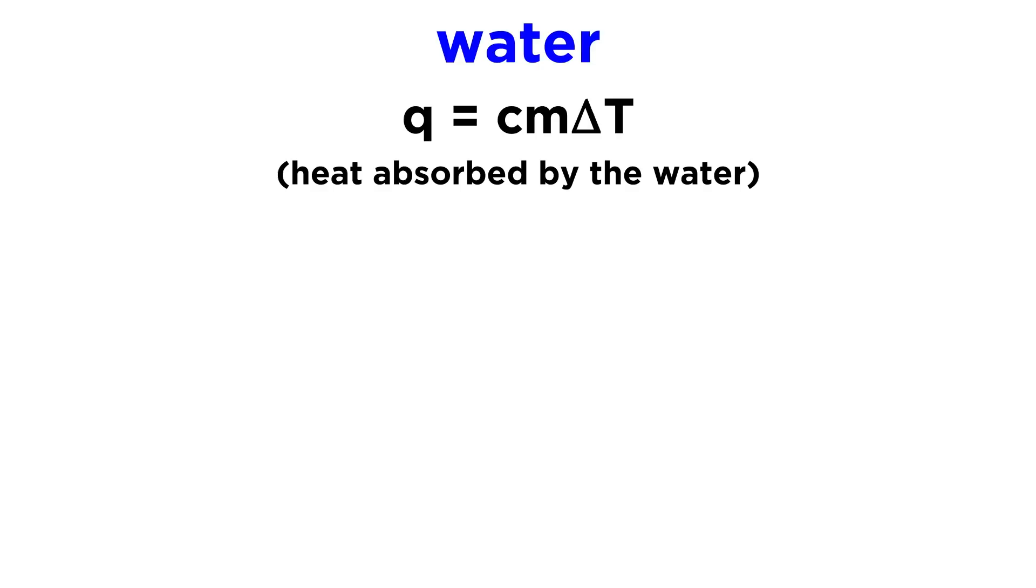So Q, or heat, is equal to C, or specific heat, times mass times delta T, or the change in temperature. So the heat absorbed by the water is going to be equal to the specific heat of water times the mass of water times the change in temperature that the water experienced. And the change in temperature, of course, is Tf minus Ti, or the final temperature minus the initial temperature.